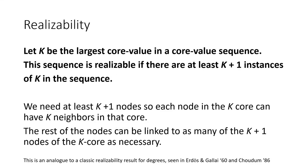As we said, the first step of this is a realizability proof to understand what core sequences are possible. It turns out there's only one rule. If k is the largest core value in a core value sequence, then there must be at least k plus one instances of k in the sequence to be realizable. And that's the only rule. We won't get into the proof here. But one way to understand this is, of course, we need at least k plus one nodes in the k-core so that every node in the k-core can have at least k neighbors in that core.